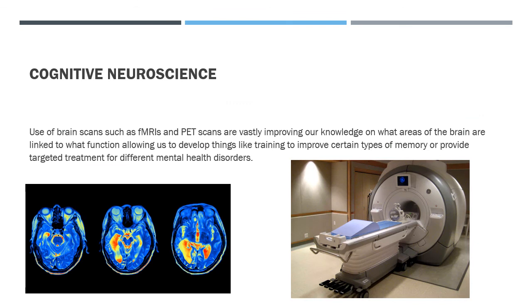Having looked at the main approaches through the history of psychology since Wilhelm Wundt in 1879, we now look at where we are currently — cognitive neuroscience — a combination of the cognitive and biological approaches. This uses brain scans such as fMRIs and PET scans, vastly improving our knowledge of which brain areas are linked to which functions. It allows development of training programmes to improve certain types of memory, and more targeted treatments for mental health disorders such as OCD, targeting the orbitofrontal cortex.